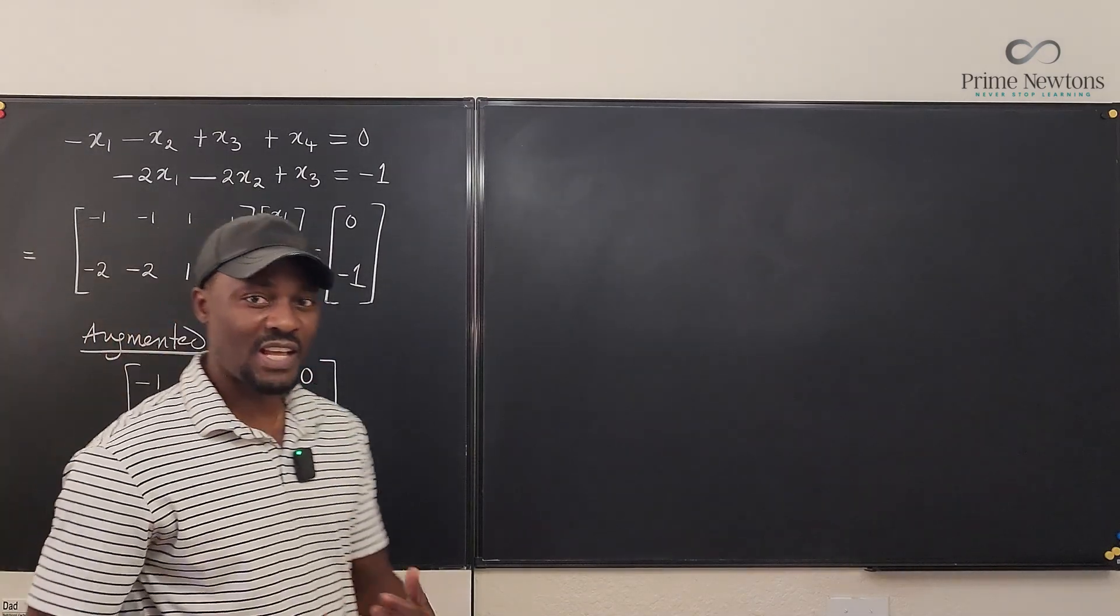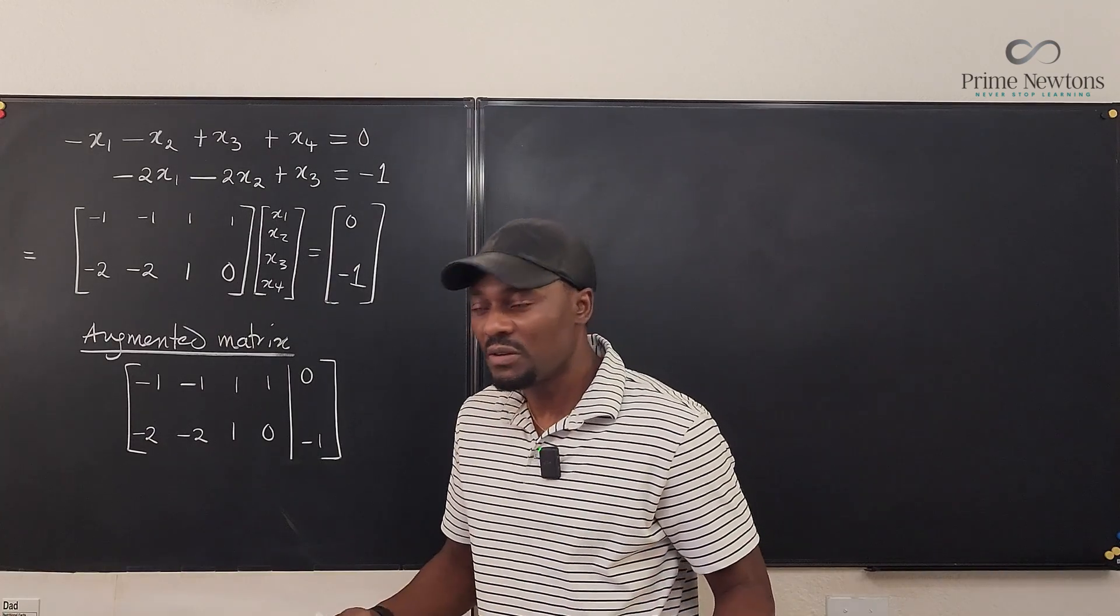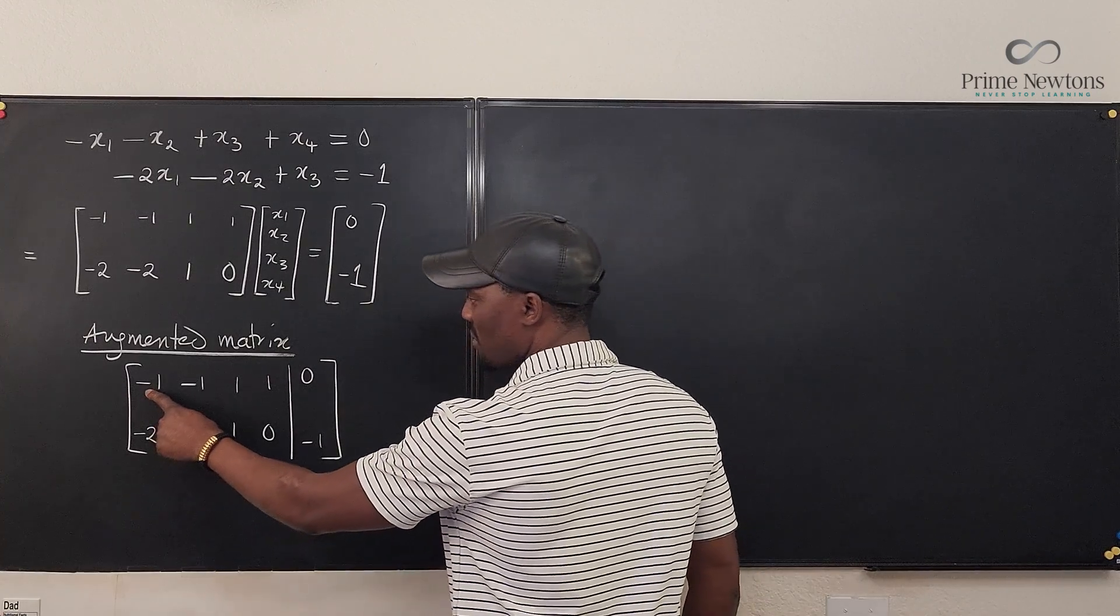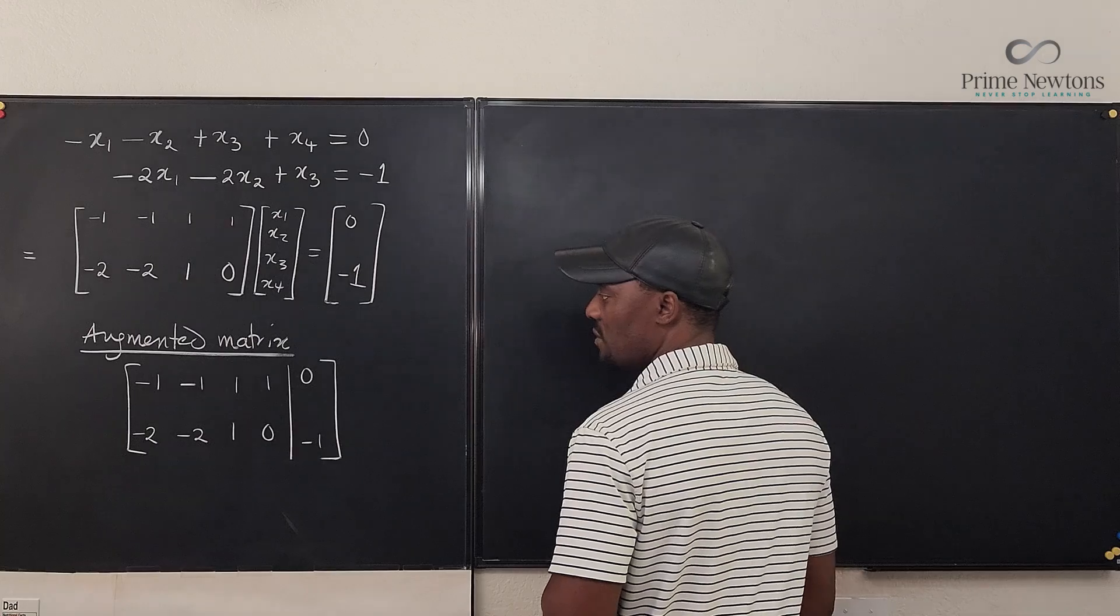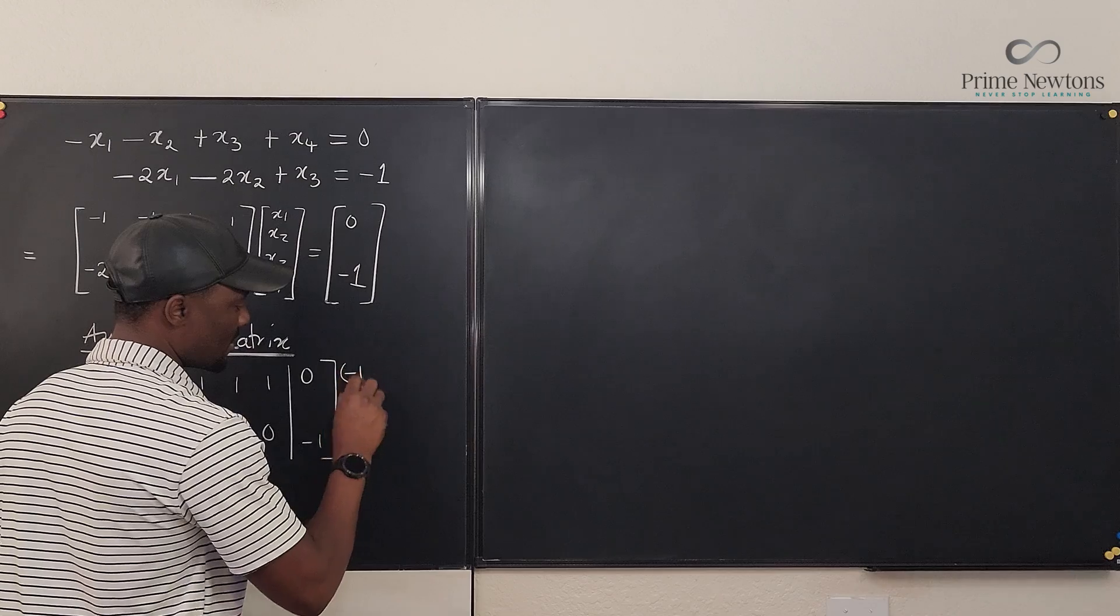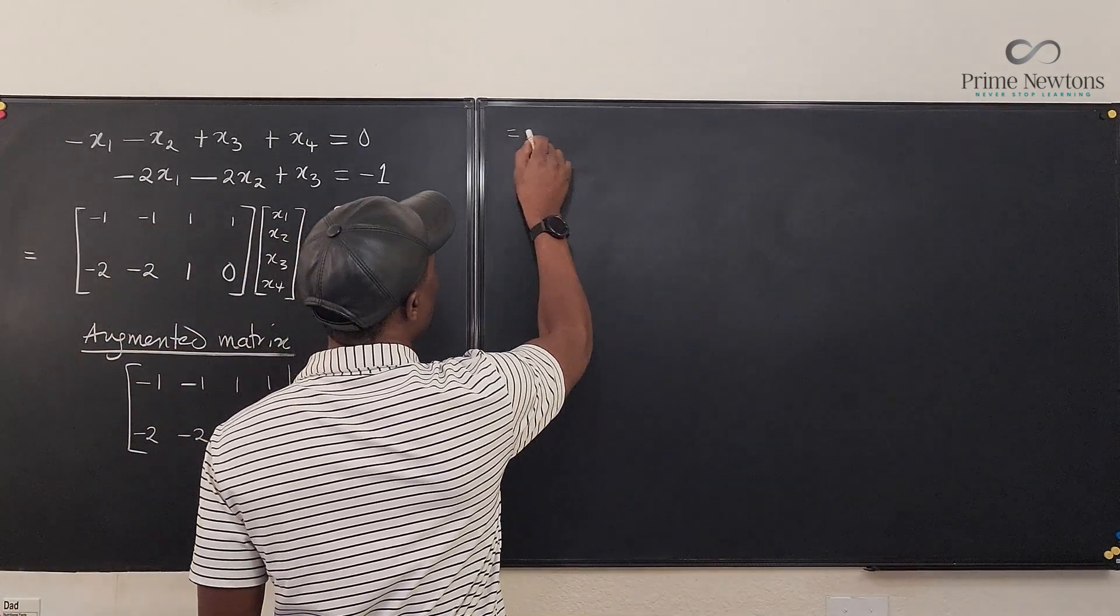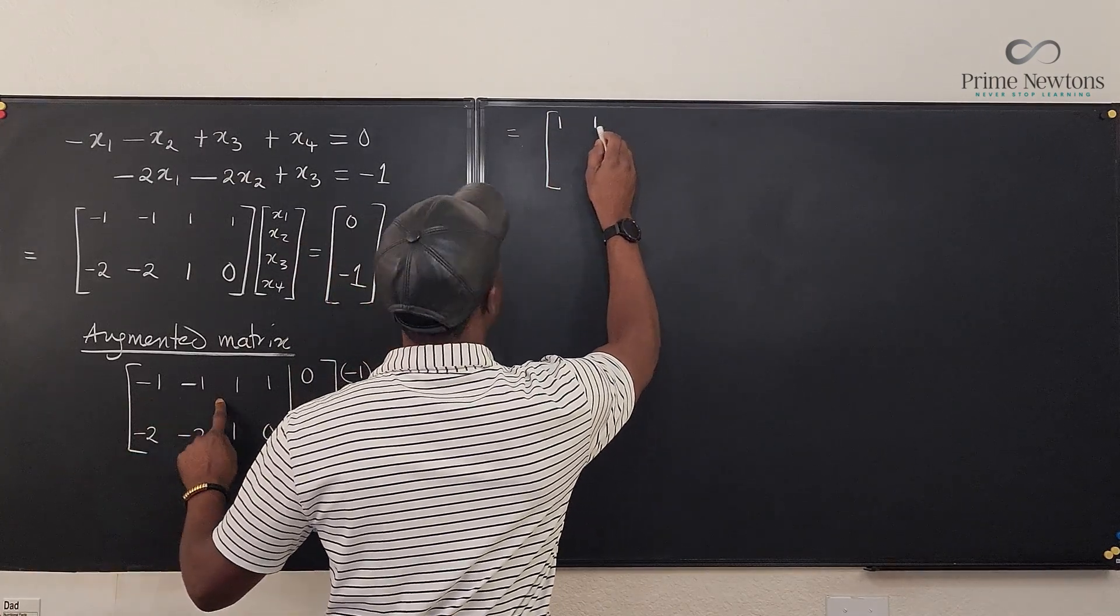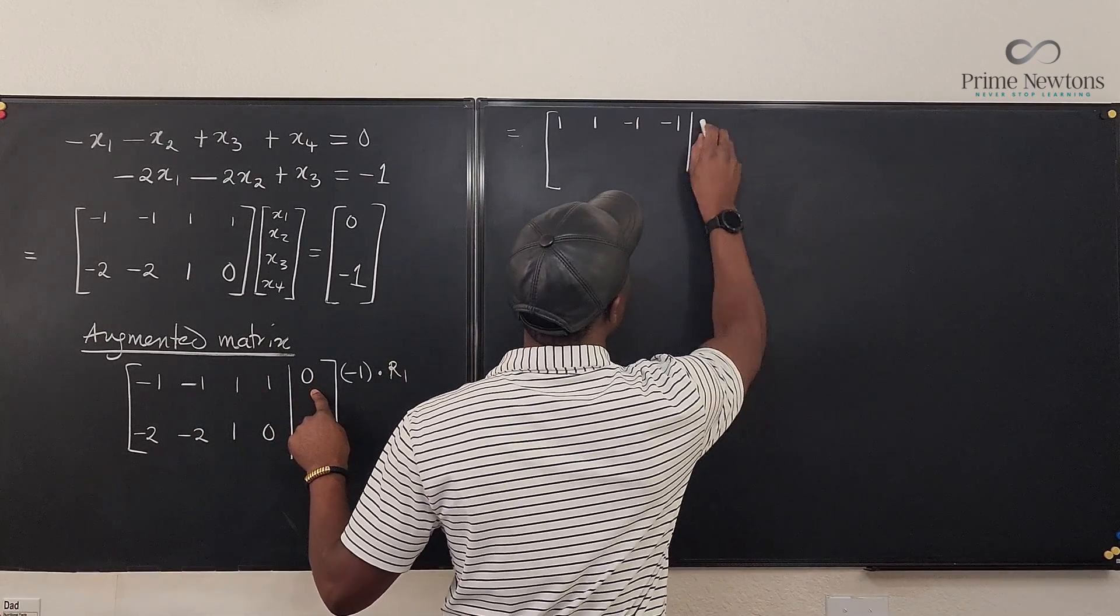So what we need to do is take this and make it into the reduced row echelon form or even the row echelon. What do we do? I don't like this minus one being here. So I'm going to multiply the first row by minus one. So I'm going to say minus one times row one. So what I get will be one, one, then I have minus one, minus one. And this times minus one gives me zero.